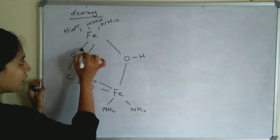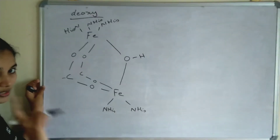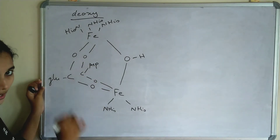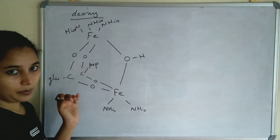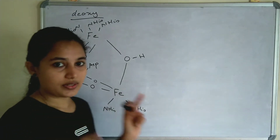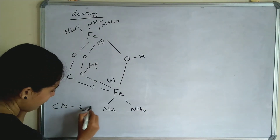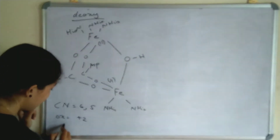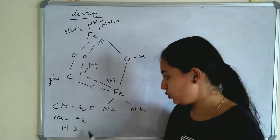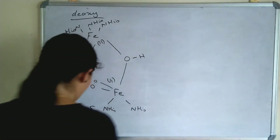The difference between the two Fe atoms is that one has 6 coordination sites and the other has only 5 coordination sites. One carbon bridge connects to glutamic acid and the second connects to aspartic acid. The coordination numbers are 6 and 5. In the deoxy form, the oxidation state of iron is +2, and the iron is in the high spin state. The magnetic character of the deoxy form is paramagnetic.